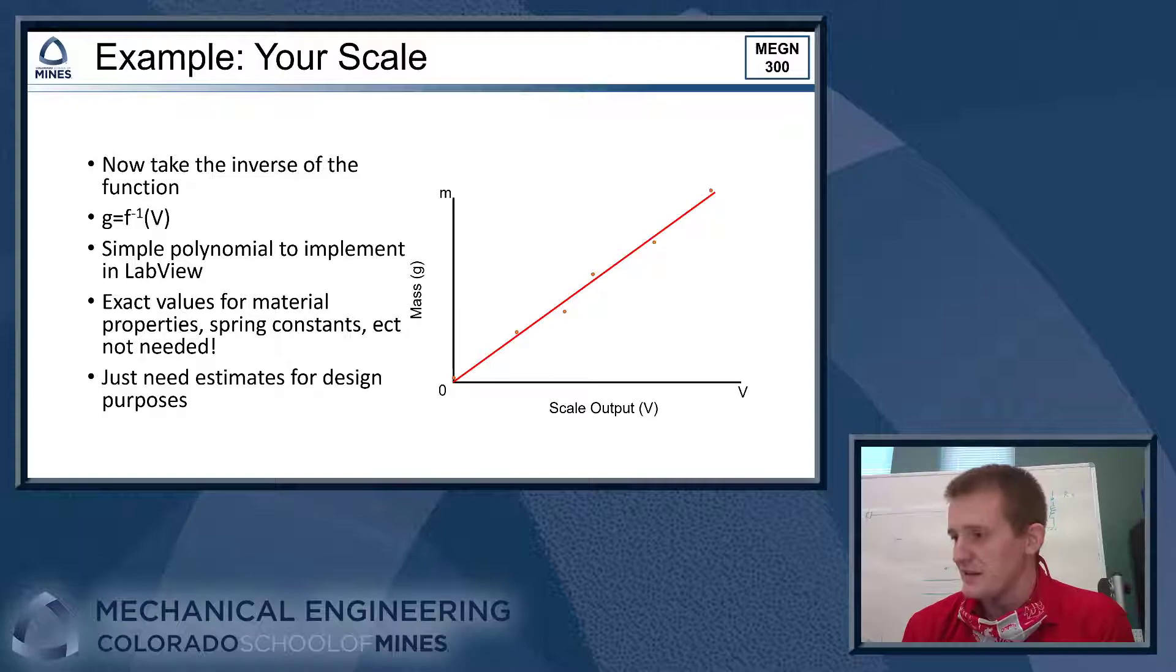So the reason why we've been estimating those in class and kind of working through that is it's important for your design work so that you can verify that your scale will work ahead of time. You can basically ballpark, you know, this is effectively what the scale should do when I build it. As long as I see something close to this, I have confidence that my scale is working properly. That's why we go through that exercise. It's important. It saves you a lot of time and heartache in the lab because you know what you're looking for. And if you get something that's significantly different than that, you know your scale is not working and it helps guide your troubleshooting. But having that experimental calibration curve makes it much, much easier to program your scale so that it will output mass in grams to the front panel of your VI.